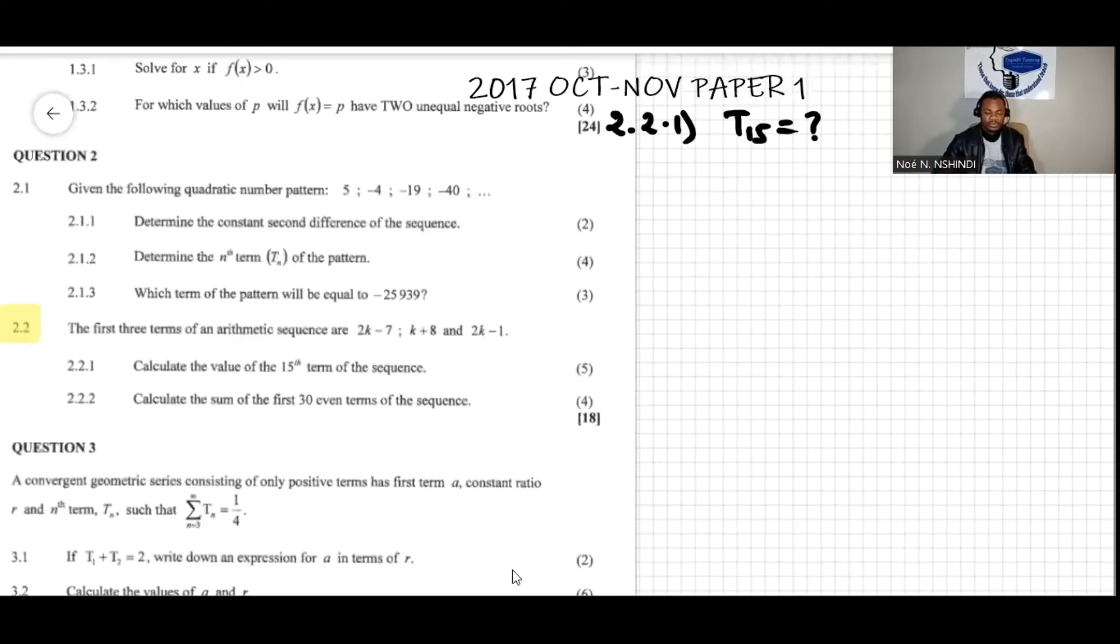It's important to note that we already know this is an arithmetic sequence. For arithmetic sequences we know there is a constant difference called d, and the formula is given by Tn equals a plus (n minus 1) times d, where d is the constant difference.